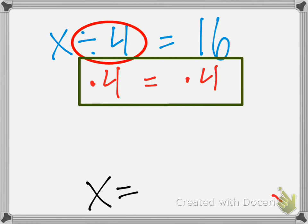What is divided by 4 times 4? It's 1. So it just becomes 1x. And what's 16 times 4? It is 64. So, that's how we do that. That is how we isolate our variables.